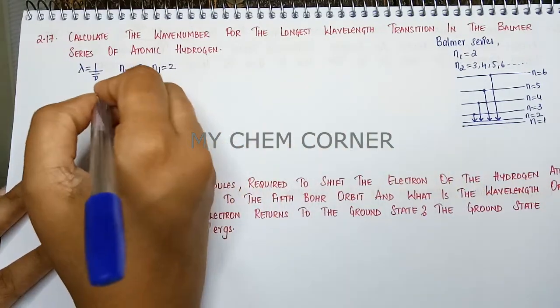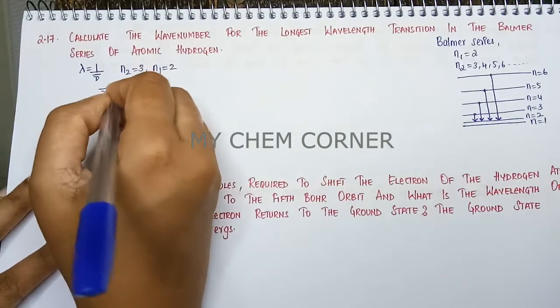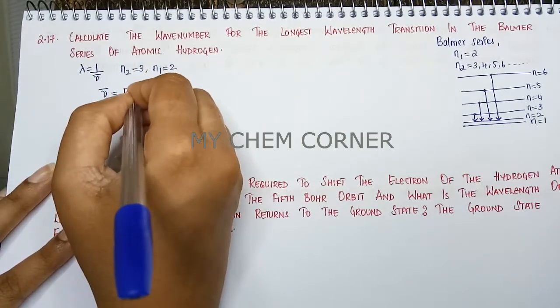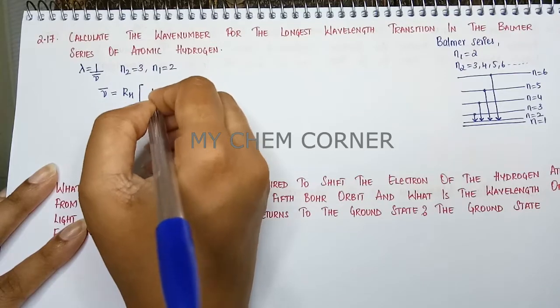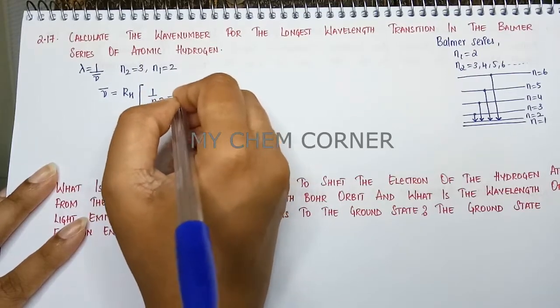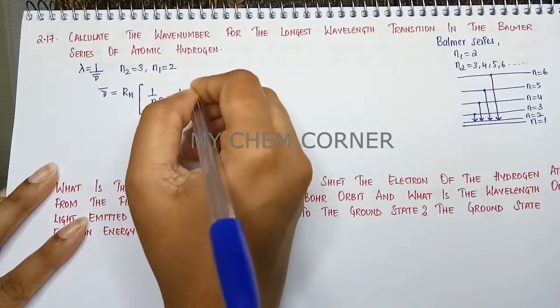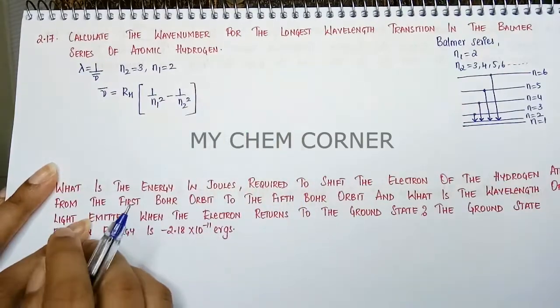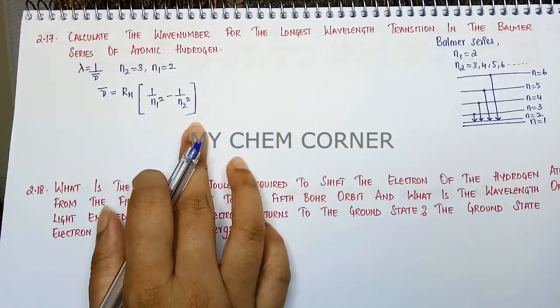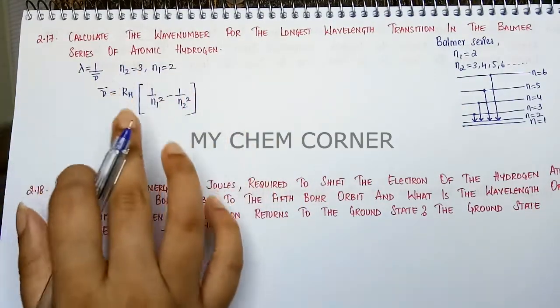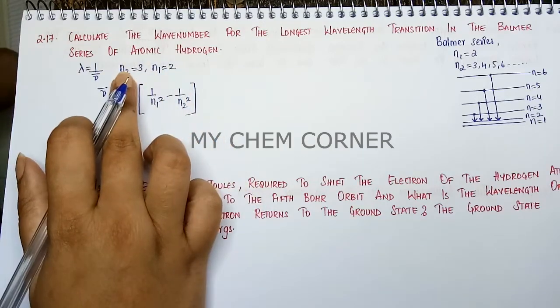So here you will do nu bar equals RH, which is the Rydberg's constant, into 1 by N1 square minus 1 by N2 square. So when we put this and write it for Balmer series, this is going to be the N1 N2 value.